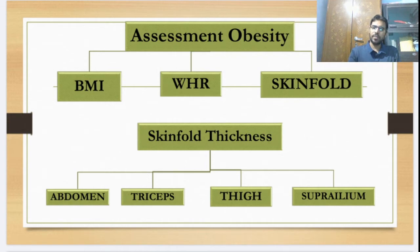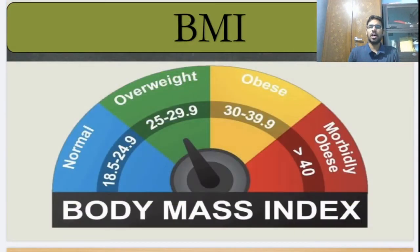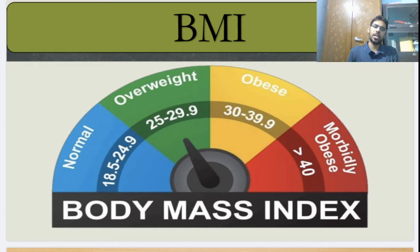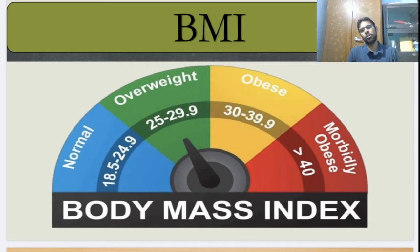BMI, as everyone knows, is Body Mass Index. After calculating your body weight in kg divided by your height in centimeters, you can check your BMI level. A BMI between 18.5 and 24.9 means you are normal. Between 25 and 29 may be overweight, more than 30 means obese, and more than 40 means morbidly obese — obesity category 1, category 2, and category 3.